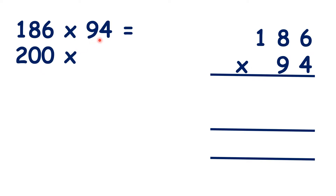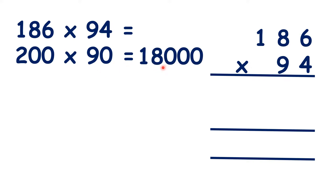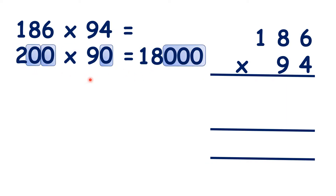And if we round 94 to the nearest 10, we get 90. So what is 200 times 90? It's 18,000 because 2 times 9 is 18. And then because we have a total of 3 end zeros in the question — 2 here and 1 here — we need 3 end zeros in our answer.